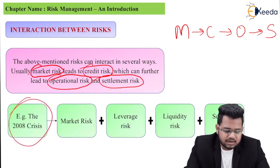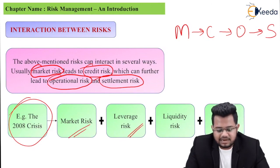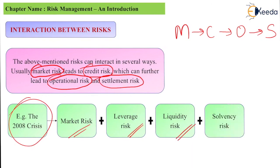A good example is the 2008 financial crisis. There was market risk, plus leverage risk because there was a lot of borrowing, plus liquidity risk — the risk of receiving less than market value — and of course solvency risk, the risk of running out of cash. Risks interact in this way: they are not in isolation but can occur in combination. Thank you for watching this video — stay tuned and subscribe to Ikeda.